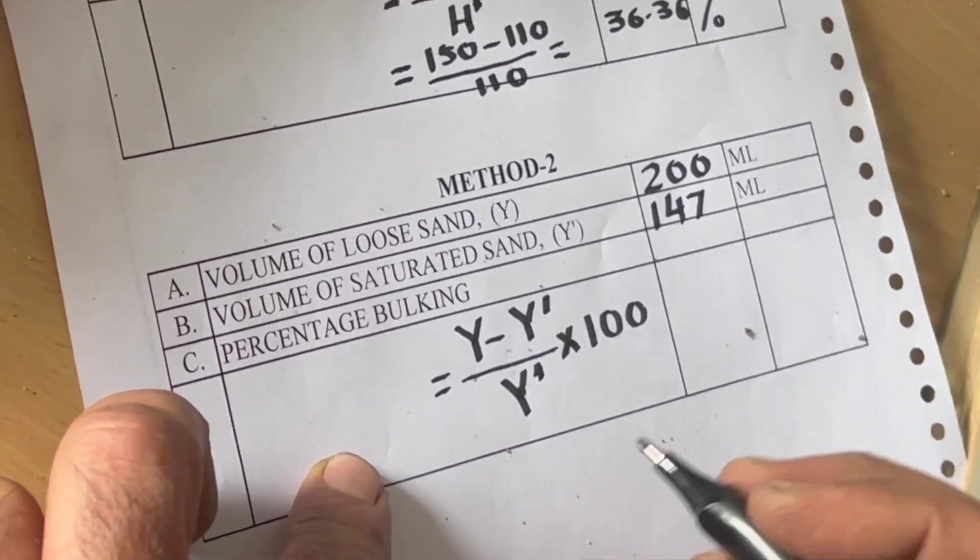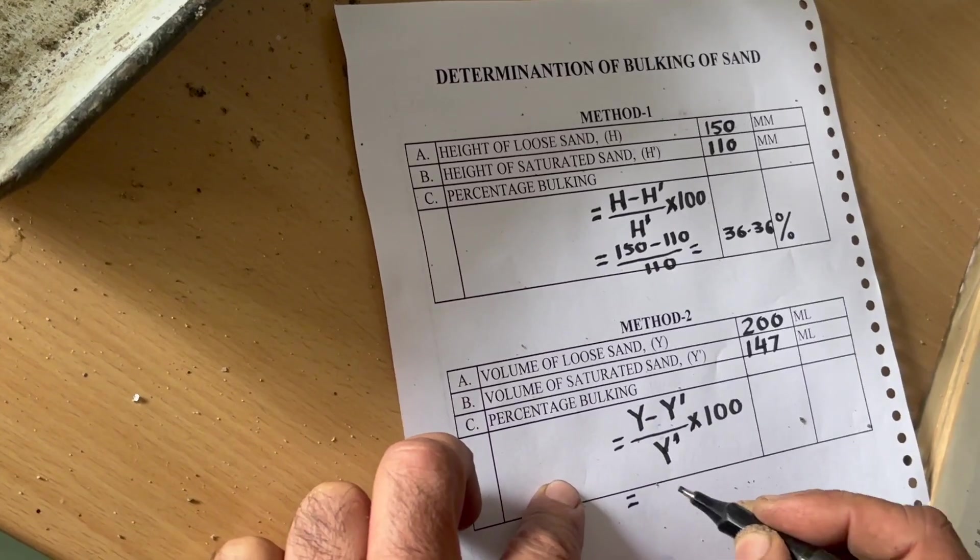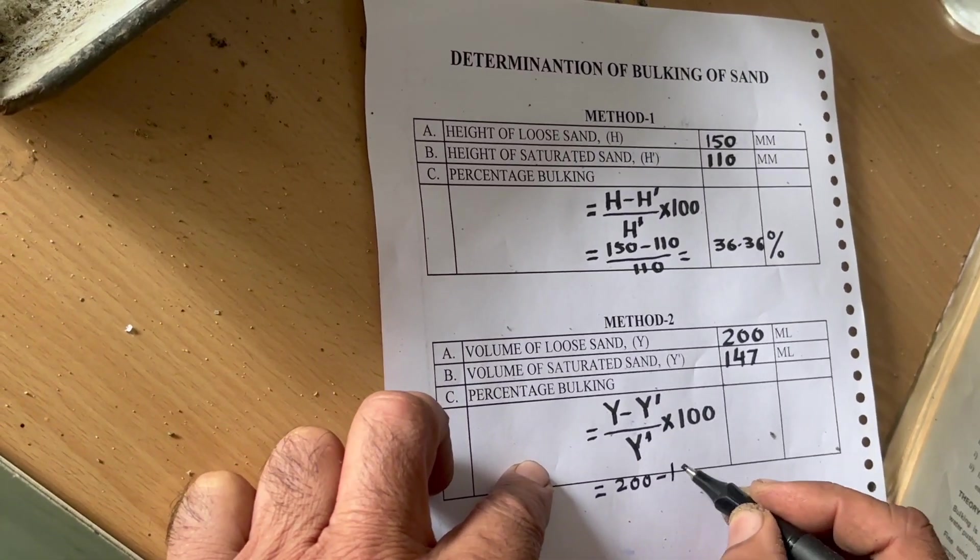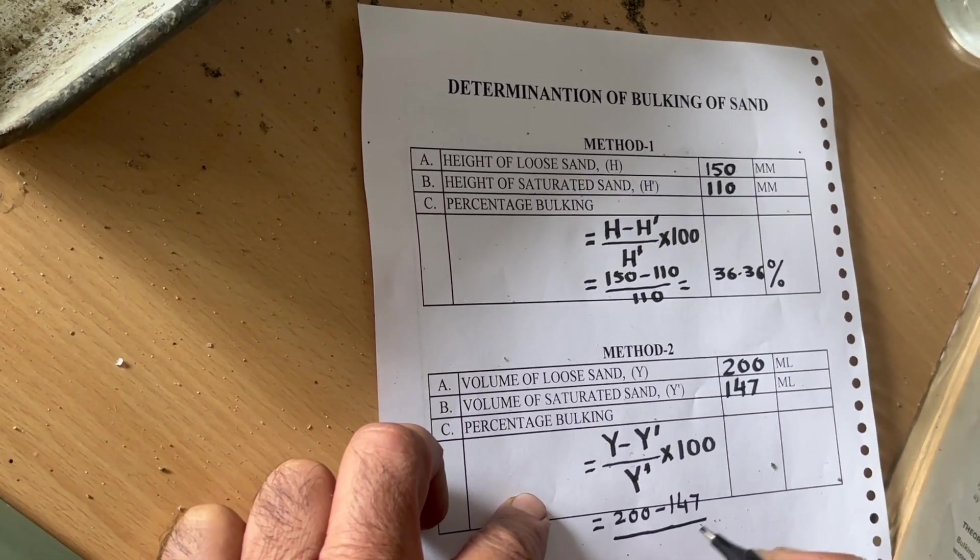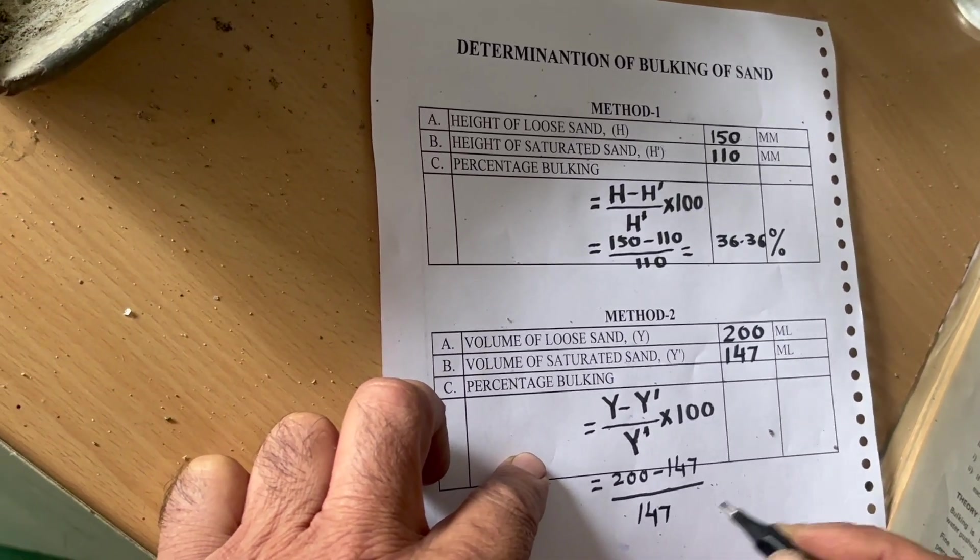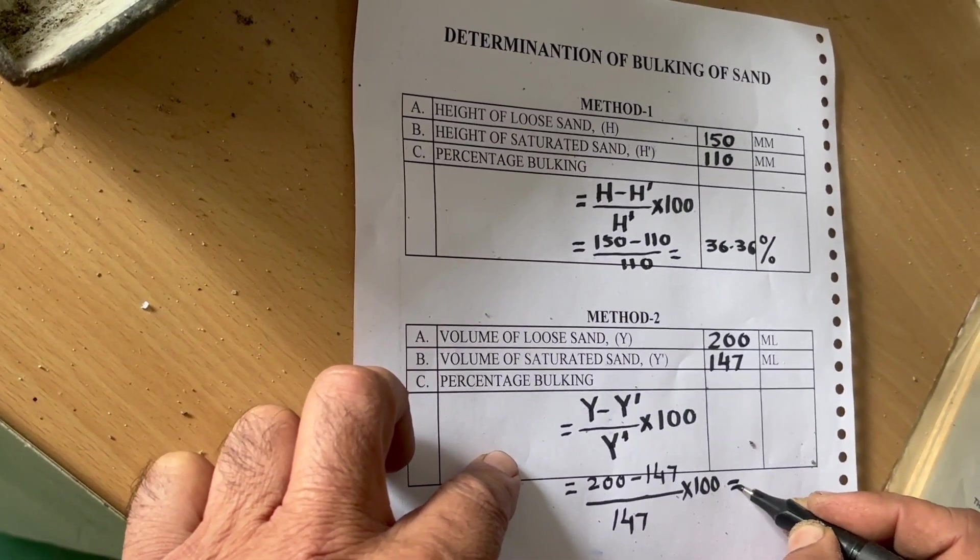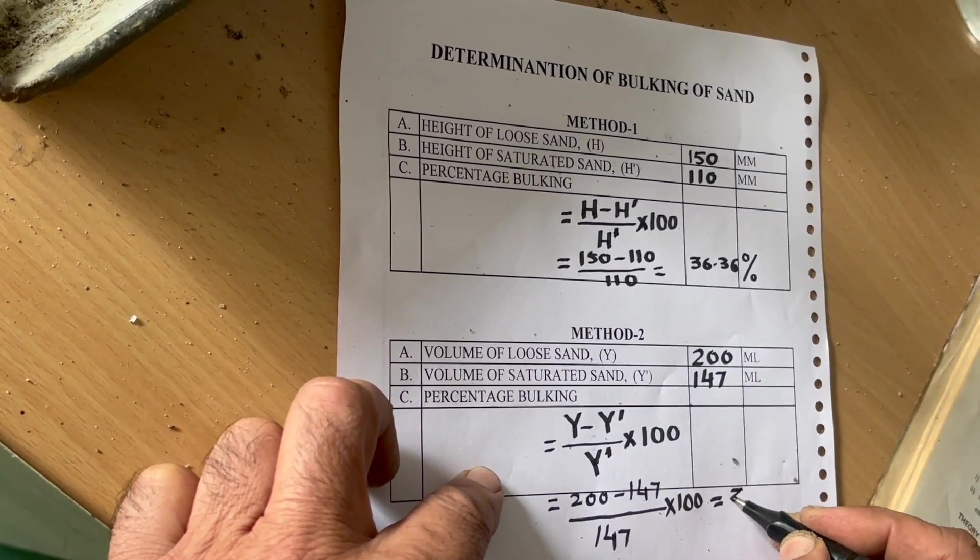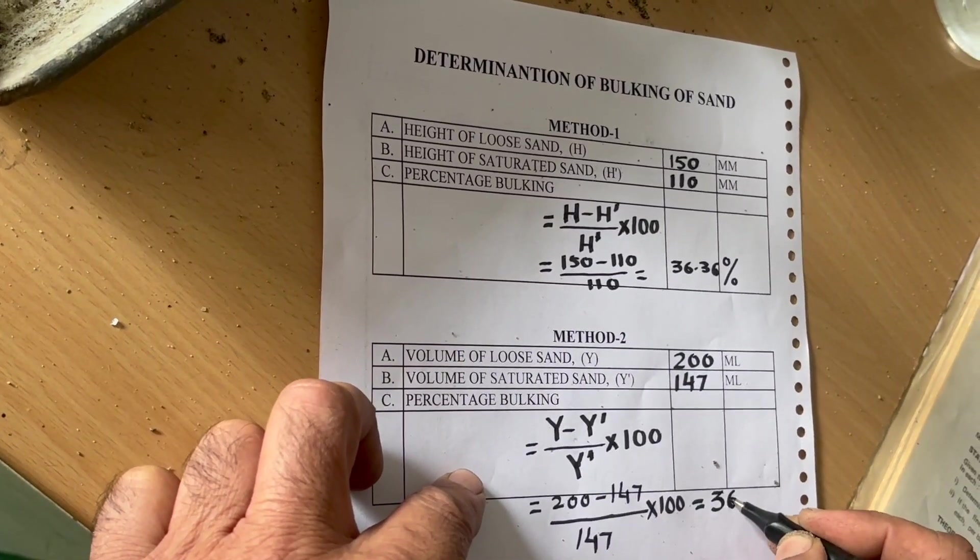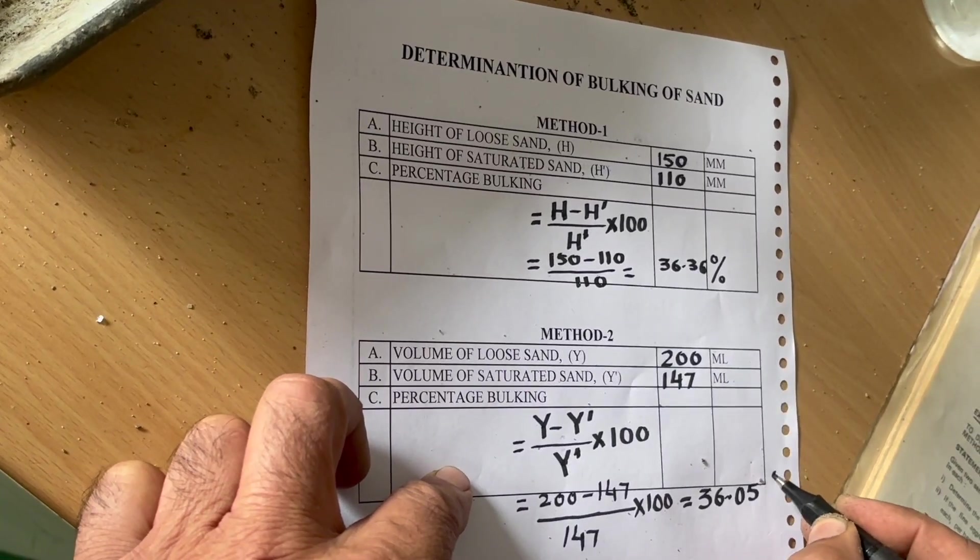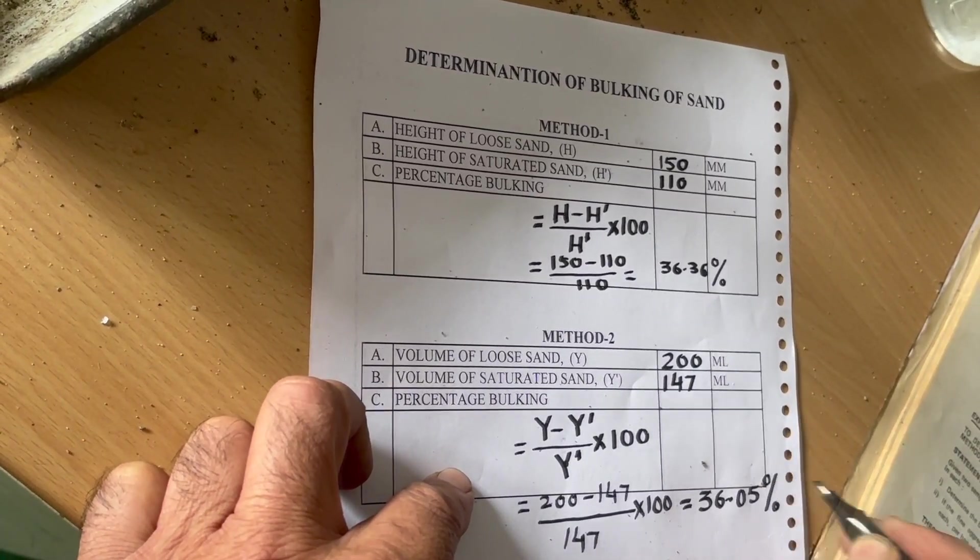So here we can calculate this is equal to 200 minus 147 divided by 147 and its percentage comes to be 36.05. This is the percentage of bulking.